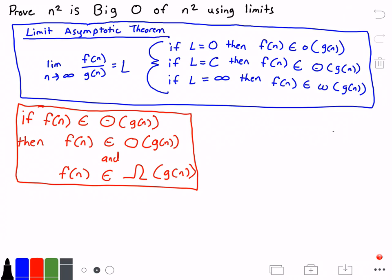We first need to identify our function F(N), and F(N) equals N squared—I got that from the problem up top. And we need to identify G(N), so G(N) equals N squared, which I also got from the problem up top.